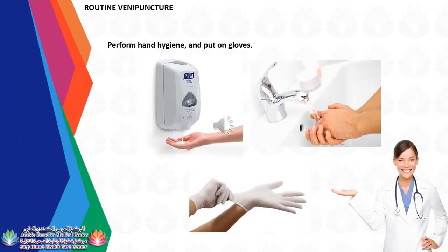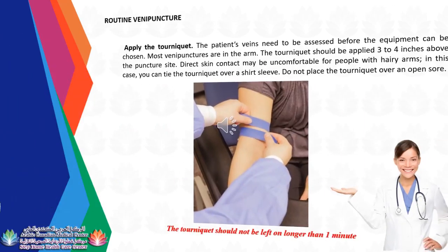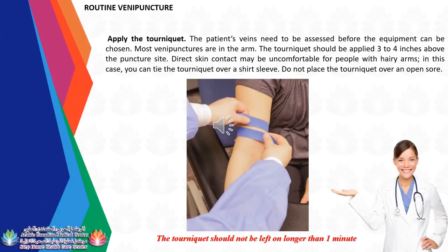Perform hand hygiene by using soap or alcohol disinfectant, and put on gloves. Apply the tourniquet: the patient's veins need to be assessed before the equipment can be chosen. Most venipunctures are in the arm. The tourniquet should be applied 3 to 4 inches above the puncture site. Direct skin contact may be uncomfortable for people with hairy arms — in this case, you can tie the tourniquet over a shirt sleeve. Do not place the tourniquet over an open sore. The tourniquet should not be left on longer than 1 minute.